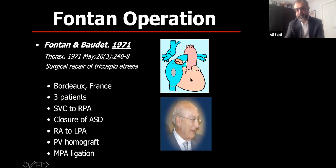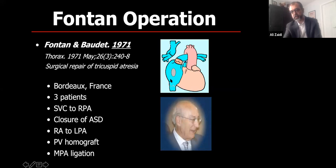In the 1970s came single ventricle palliation — very complex congenital heart disease. In Paris, Francis Fontan was a surgeon dealing with tricuspid atresia, where the tricuspid valve is atretic so blue blood cannot enter the right ventricle. He hooked the atrium directly into the left pulmonary artery, ligated the SVC and anastomosed it to the right pulmonary artery. All head and neck venous blood goes to the right lung; IVC flow goes to the left pulmonary artery; blood oxygenates and returns to exit the aorta. This was the first Fontan single ventricle palliation, in the 1970s.